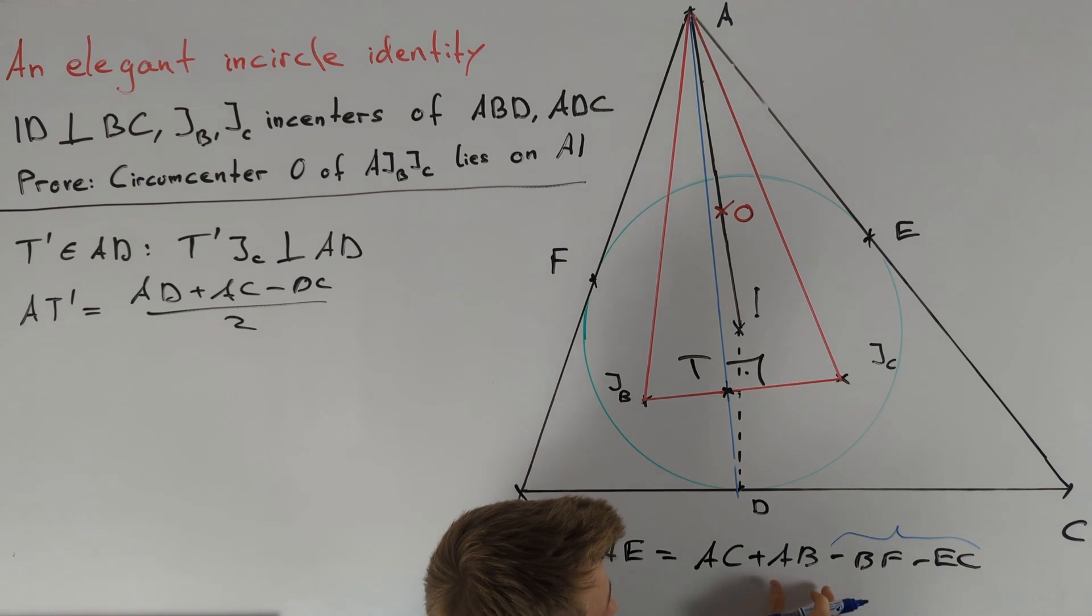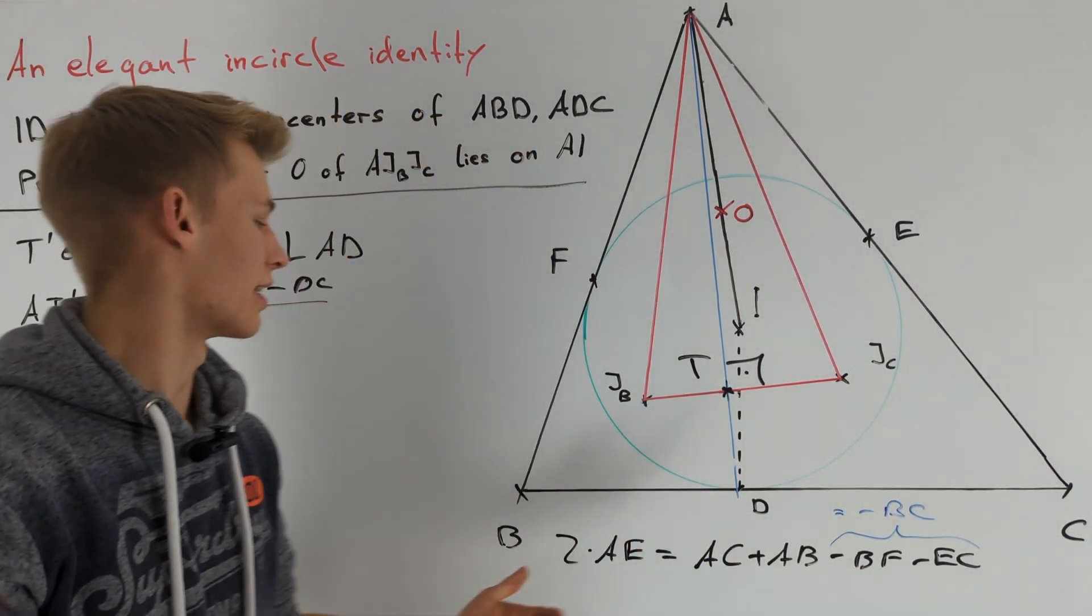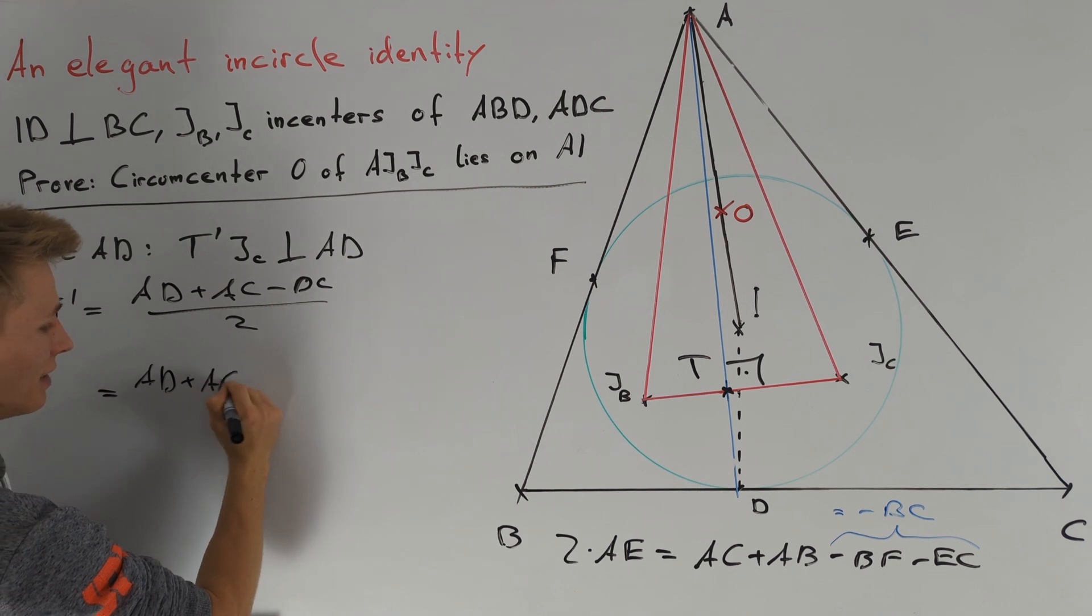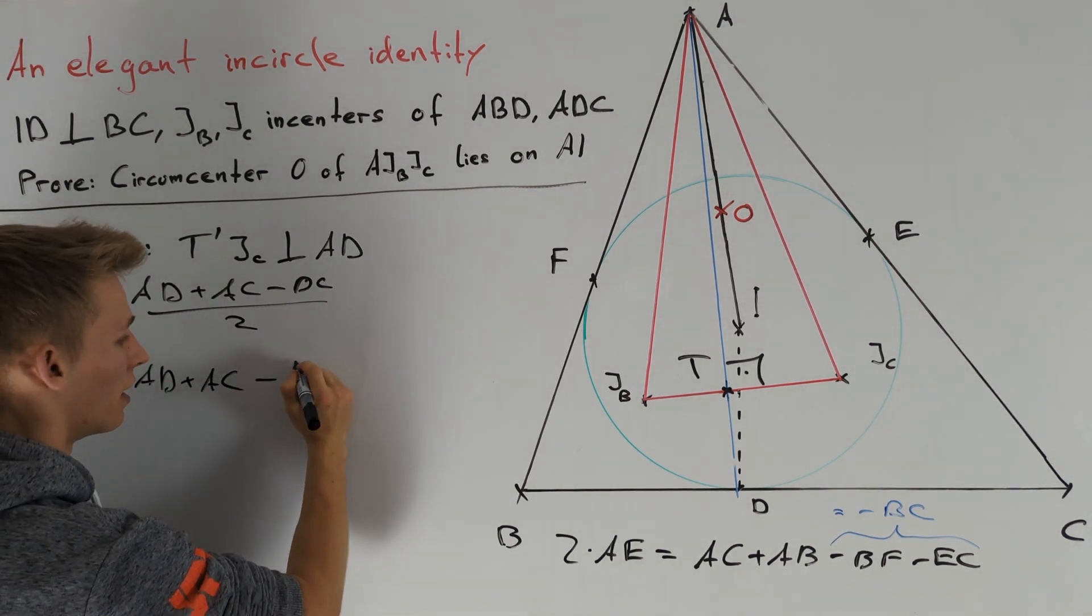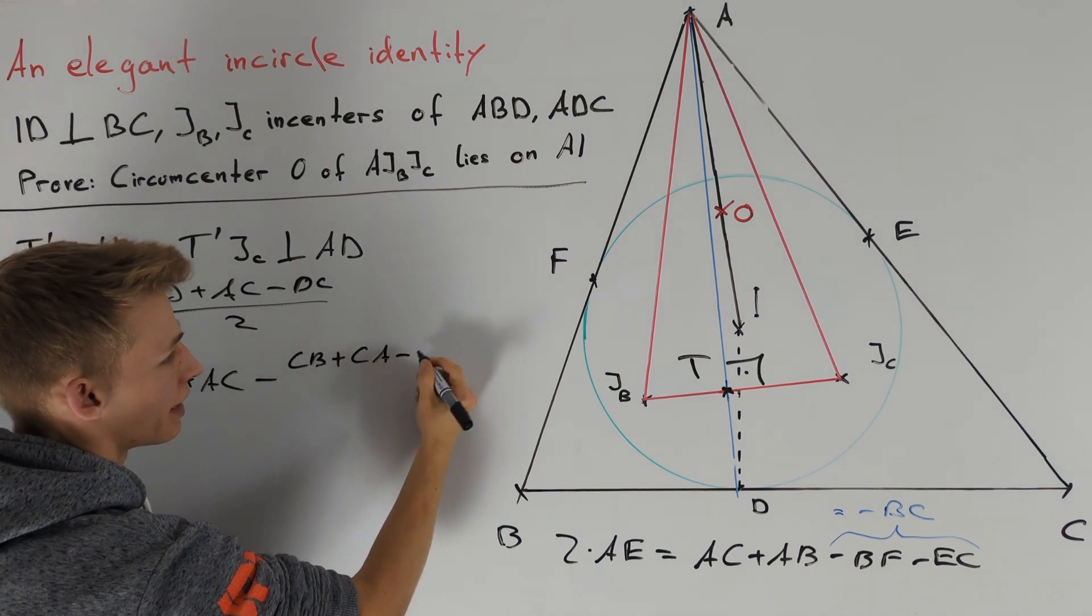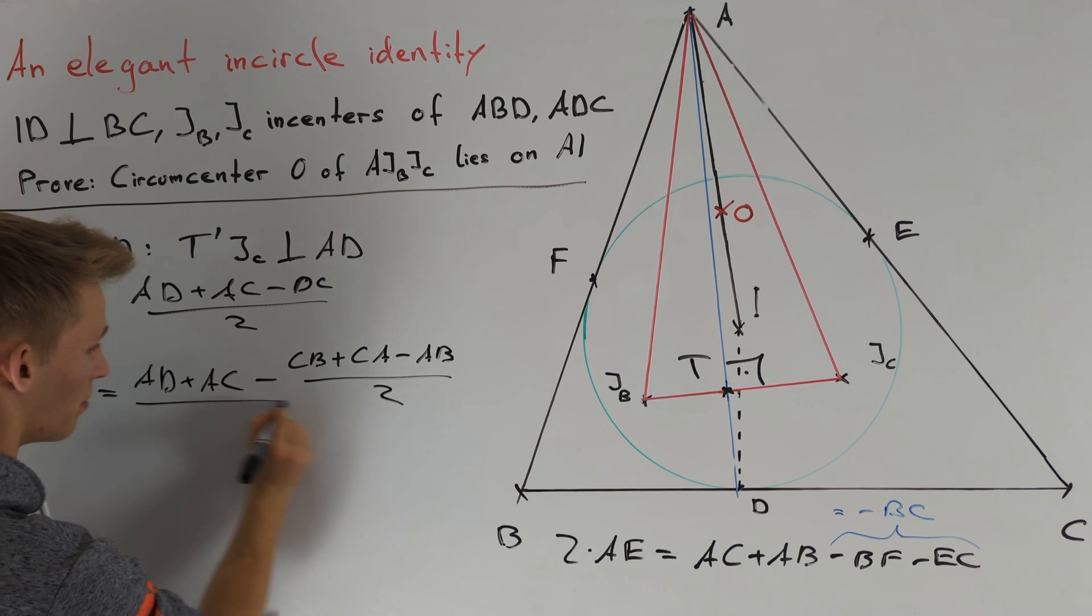Using this formula again, we calculate AT' as (AD + AC - (CB + CA - AB)/2)/2, which simplifies to (2AD + AC + AB - BC)/4.